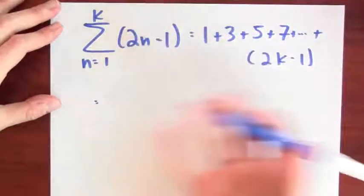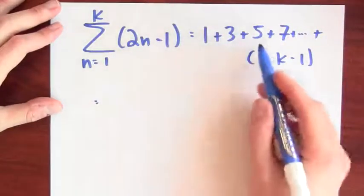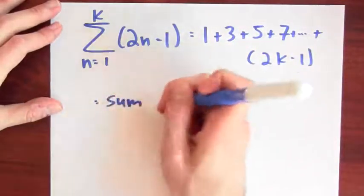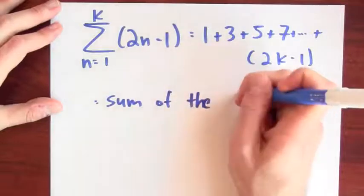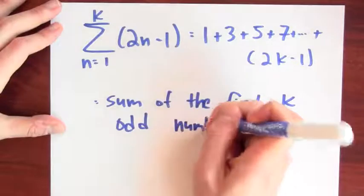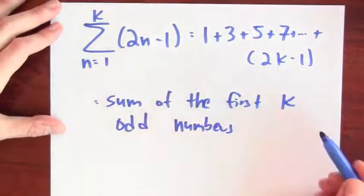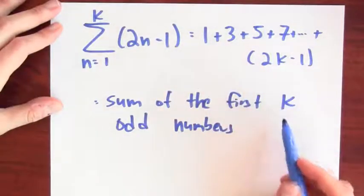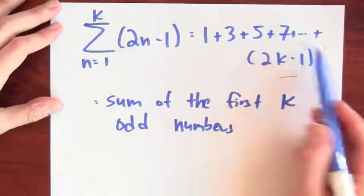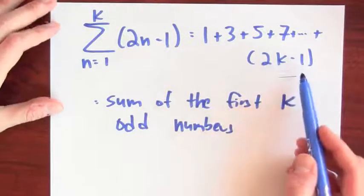In words, what is this asking me to do? Well, 1, 3, 5, this is adding up odd numbers. So I could say in words that this is the sum of the first k odd numbers. I'm going to add up the first k odd numbers, 1 plus 3 plus 5 until I get to the kth odd number, which is 2k minus 1.